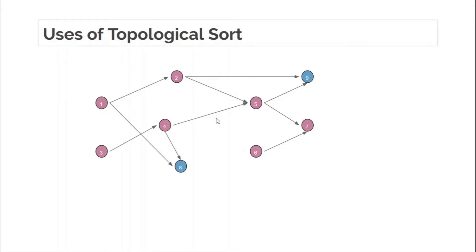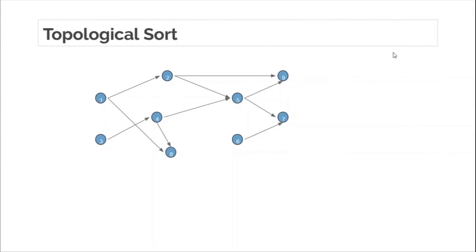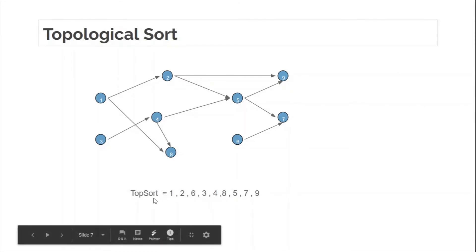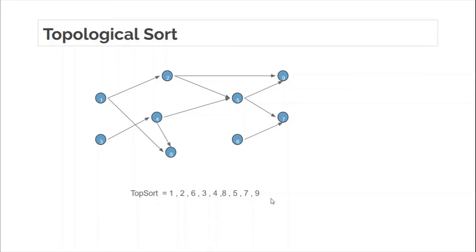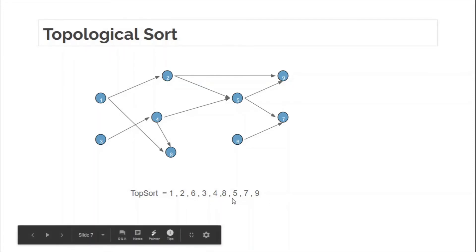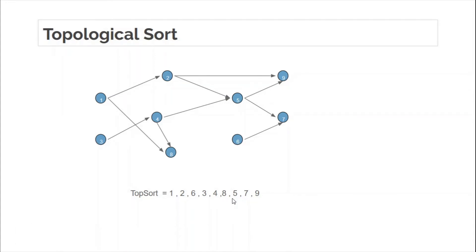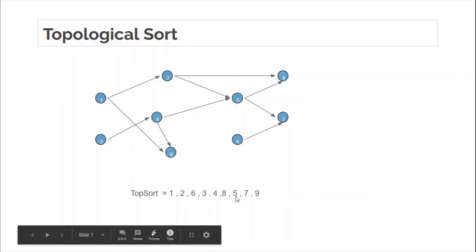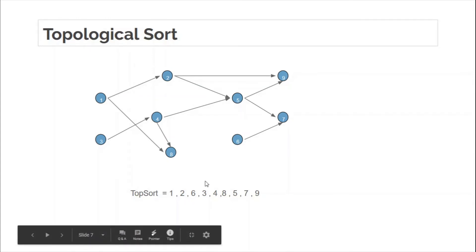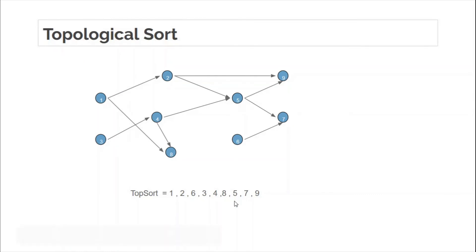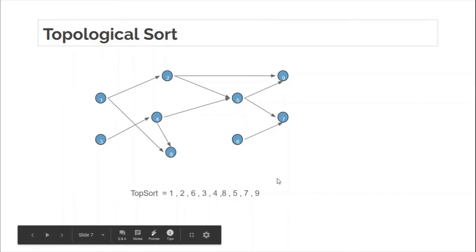Similarly, for five, its dependencies two and four should appear before five. For two, its dependency is one, so one should appear before two. One valid topological ordering for this graph can be: first complete one, then two, then six, three, four, eight, five, seven, and nine. If you check, for each process all of its dependencies appear before it. For five, dependencies two and four appear before it. For two, dependency one appears before it. For eight, dependency one also appears before it. This is a valid topological sort.